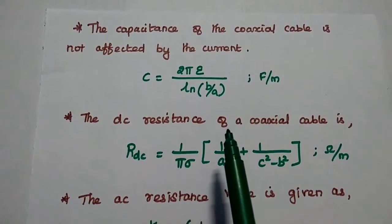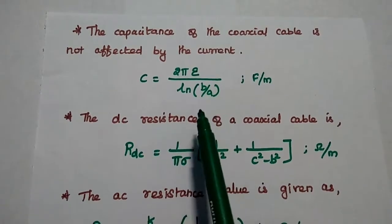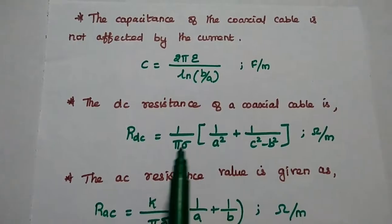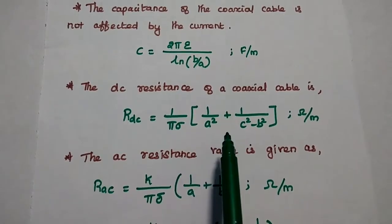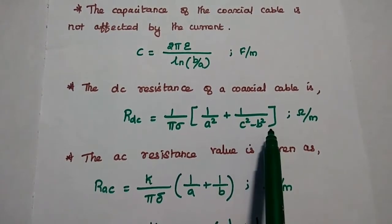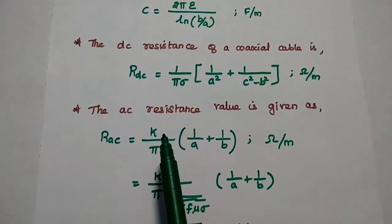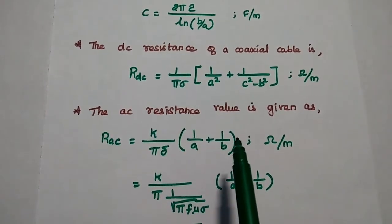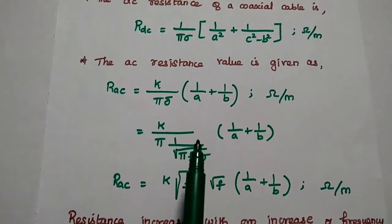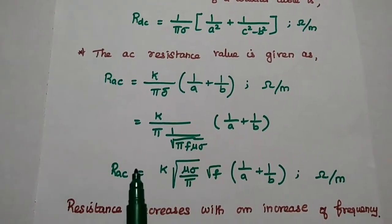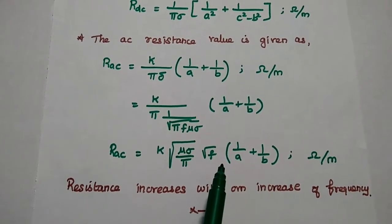The capacitance of the coaxial cable is not affected by the current; it is C = 2*pi*epsilon / ln(B/A), with unit Farad per meter. The DC resistance is given as R_DC = (1/pi*sigma) * (1/A^2 + 1/(C^2 - B^2)), with unit Ohm per meter. The AC resistance is R_AC = K/(pi*delta) * (1/A + 1/B). Substituting the value of delta, we can show that R_AC is directly proportional to frequency.